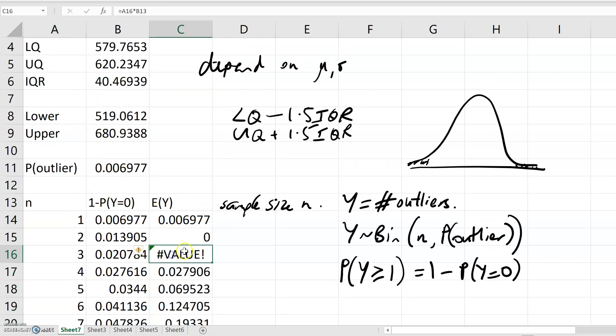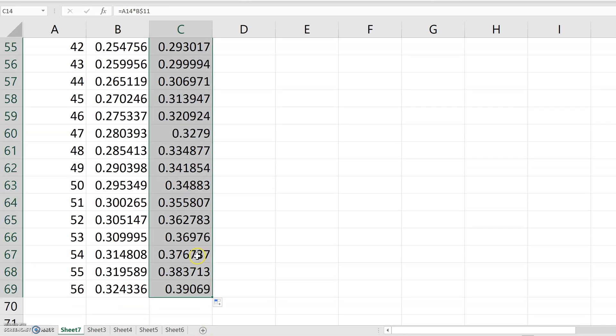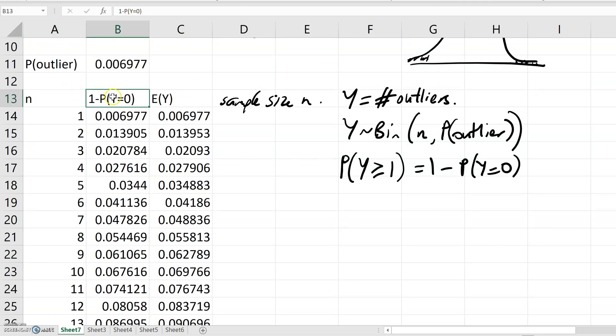What's going on here? I forgot to lock in probability, so let me do that again. Okay, I've copied those formulas down a bit, but let's look at a graph.